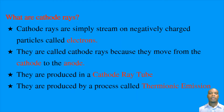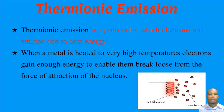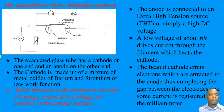Cathode rays are produced by a process called thermionic emission. Thermionic emission is a process by which electrons are emitted due to heat energy. When a metal is heated to very high temperatures, electrons gain enough energy to break loose from the force of attraction of the nucleus. You can see in the picture that as the hot filament gets very hot, the electrons gain enough energy and are able to escape from its surface.